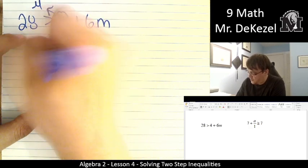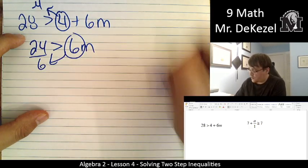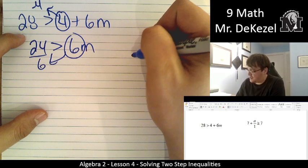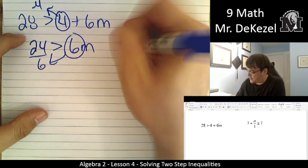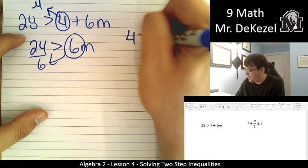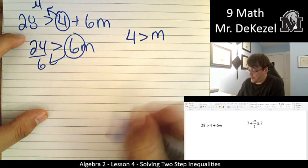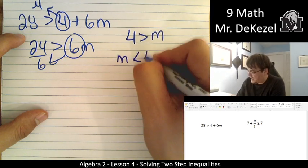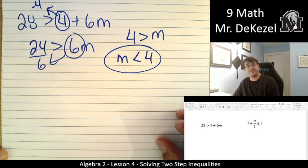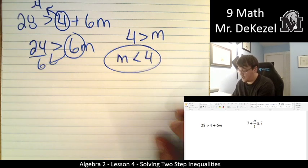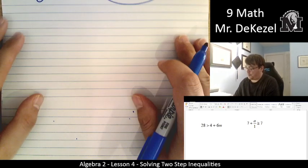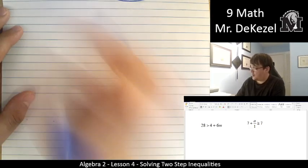Move the 6 over to the other side. 24 divided by 6 is 4. Yes. So that's 4 is greater than m. But we want to go ahead and flip that around. m is less than 4. Again, pause the video at any time. Encourage that for sure.